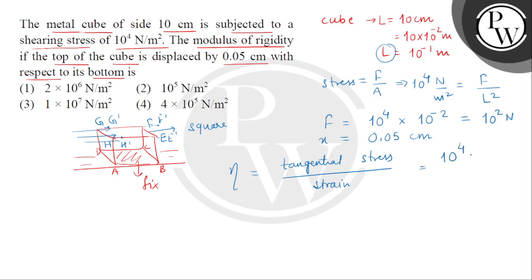So this is 10⁴. और strain कैसे मिलेगा? अगर हम join कर देंगे there is theta. Strain is tan θ. So eta equals 10⁴. अब tan θ equals X/L, which is 0.05 divided by 10.